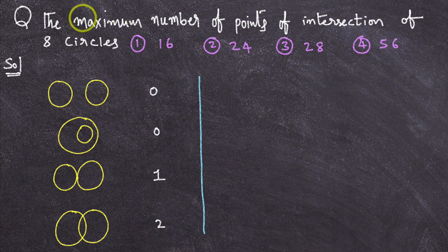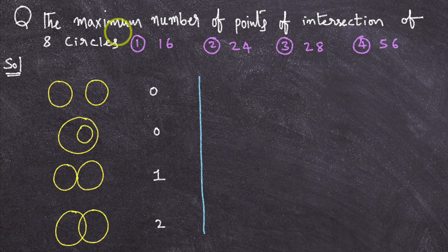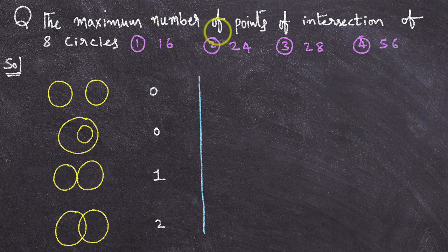You need to observe one thing carefully here. Maximum number of points of intersection. They are not asking number of points of intersection. Maximum possible number of points of intersection of 8 circles.